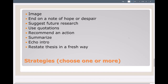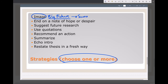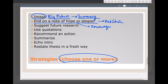Here are some strategies for writing a conclusion. You can choose one or more of these strategies and order them in a logical fashion. The first is to make an image for the reader — like a big picture, a summary that helps the reader visualize your essay's point. You can also end on a note of hope or despair — that's a kind of prediction. Hope would be some sort of encouragement; despair might be some sort of warning. You could also suggest future research — some kind of advice, especially in scientific writing.